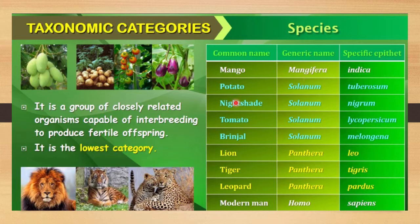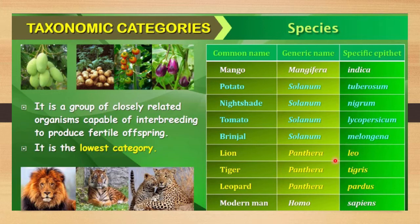For mango, the species name is indica and Mangifera is the genus name. For potato, the scientific name is Solanum tuberosum — Solanum is the genus name and tuberosum is the specific epithet. Nightshade is Solanum nigrum, tomato is Solanum lycopersicum, brinjal is Solanum melongena, lion is Panthera leo, tiger is Panthera tigris, leopard is Panthera pardus, and modern man is Homo sapiens.